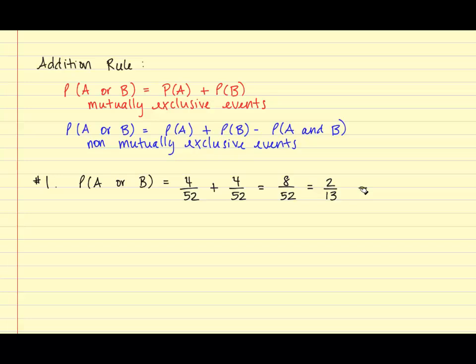The second question asks: what is the probability of selecting a king or a club from a deck of cards? Once again, we are trying to find the probability of A or B. For this example, the events are not mutually exclusive because both share a king of clubs. Therefore, we are going to use the second formula for non-mutually exclusive events.